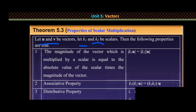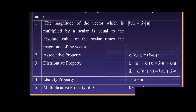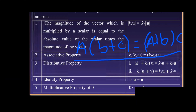We consider the absolute value of k1 times u equals the absolute value of k times the absolute value of u. We consider that k times the number of vectors is the number of vectors. The property here is the associative property.